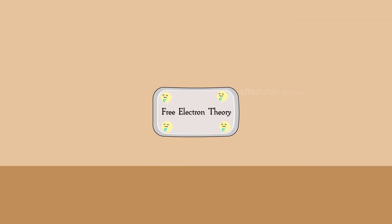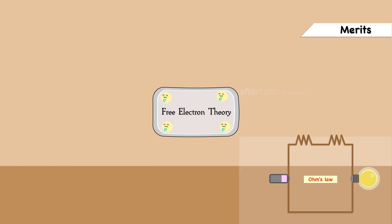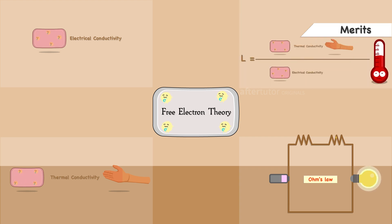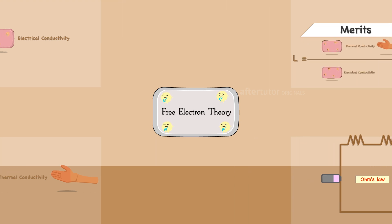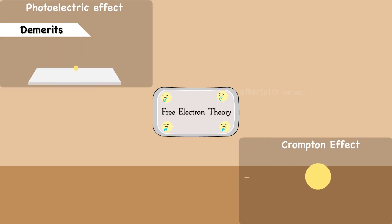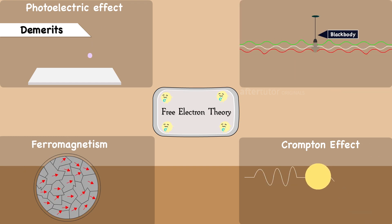Every theory has its own merits and demerits. The free electron theory explains the concept of Ohm's law, electrical and thermal conductivity, and in deriving the Wiedemann-Franz law. However, it fails to explain the concept of the Compton effect, photoelectric effect, ferromagnetism, and blackbody radiation.